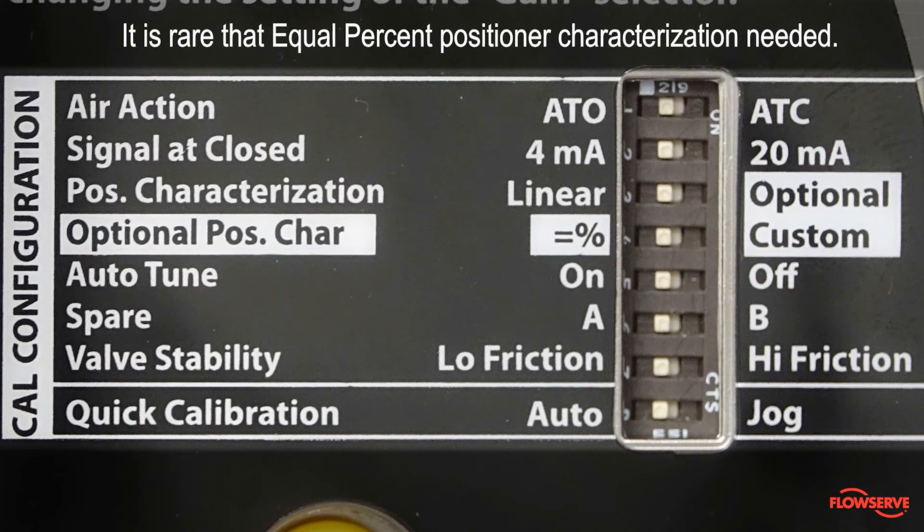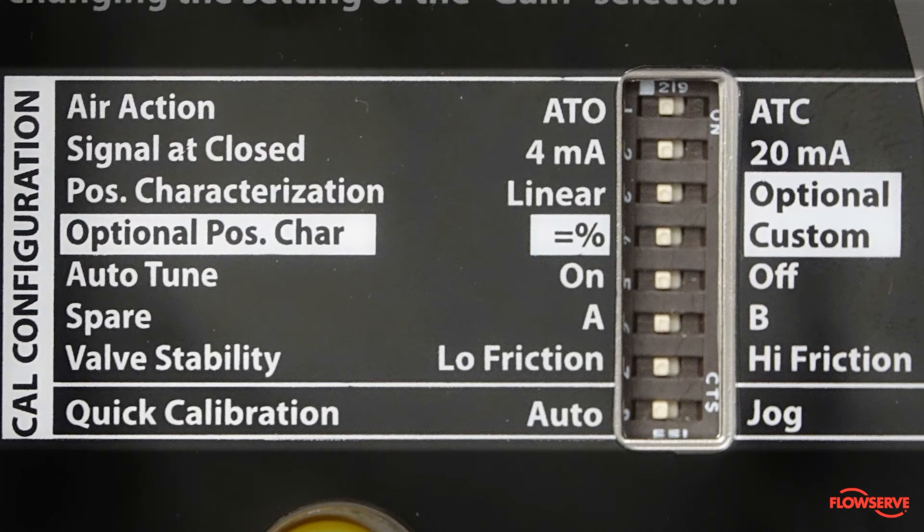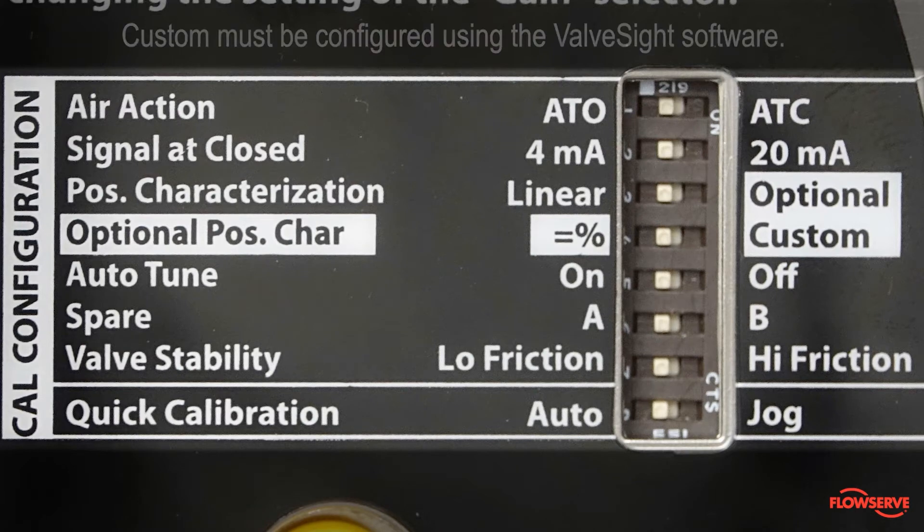Note it is rare that equal percent positioner characterization is needed. This is almost always in the valve trim configuration. Custom is an advanced setting and must be configured using the valve site software.